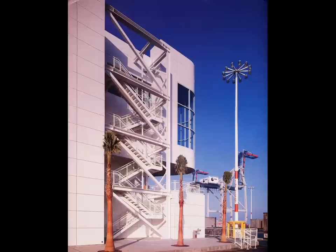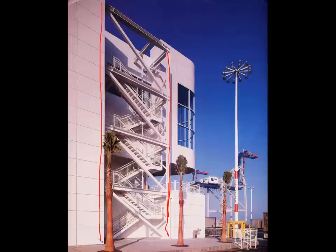Here we have two columns — one right here, and another hidden behind this facade right there. These two things are braced together. This column comes up and this point on it is braced back to that footing and that footing, so it's not possible for it to move in either direction.